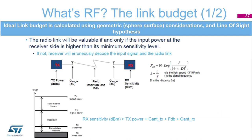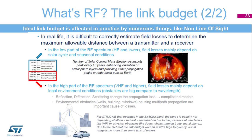Ideal link budget is calculated using geometrical sphere surface considerations and line-of-sight hypothesis. The radio link will be valid if and only if the input power at the receiver's site is higher than its minimum sensitivity level. If not, the receiver will erroneously decode the signal. The equation is called the Friis equation — it expresses attenuation of free space with an isotropic antenna. RX sensitivity must fulfill an energy balance relation. In practice, the ideal link budget is affected by numerous factors such as non-line-of-sight conditions, making it difficult to correctly estimate field losses.